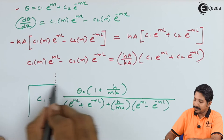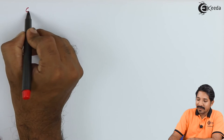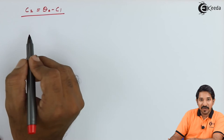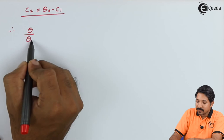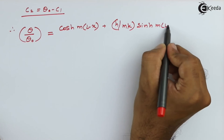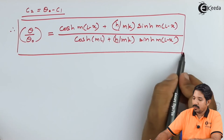Similarly, we can get the value of C2 as theta0 minus C1, and further solve it. Finally, instead of writing C1 and C2 separately, we substitute their values into the main equation. The result gives us the temperature distribution for this third case.